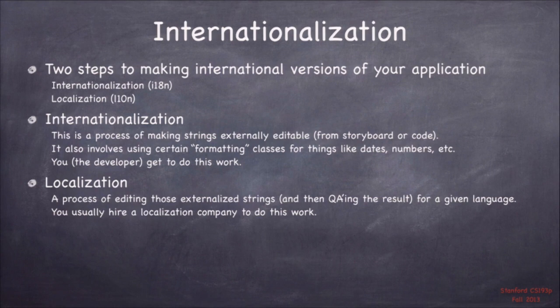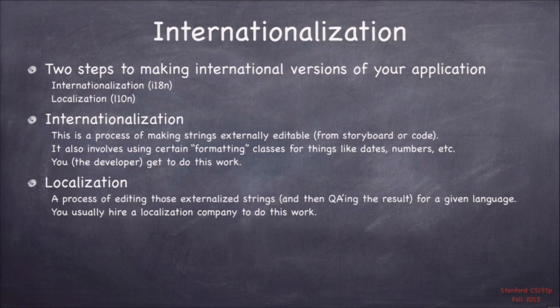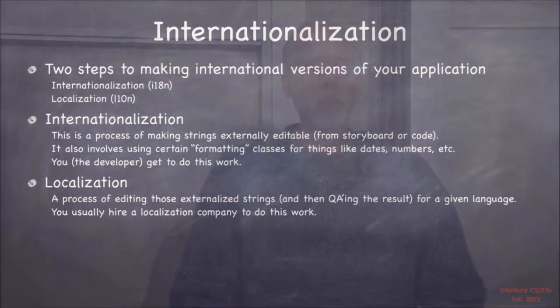There are really two steps to internationalization. There's something we call internationalization, sometimes abbreviated I18N — because there's 18 letters in there — and then there's localization. Internationalization is the process of making your app possible to be localized, making it so that your app can be shipped in multiple different languages. Localization is the process of actually translating your application to another language. Internationalization is something you do as the developer; localization, usually you hire someone to go do that.